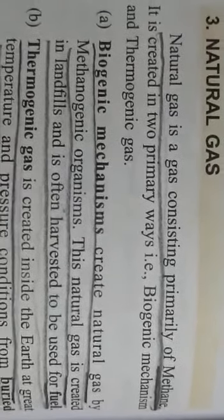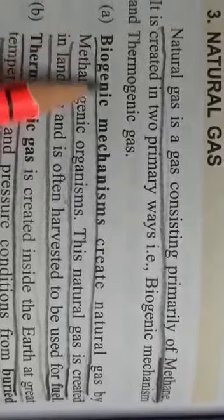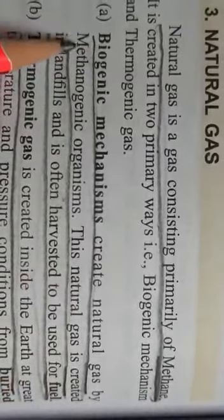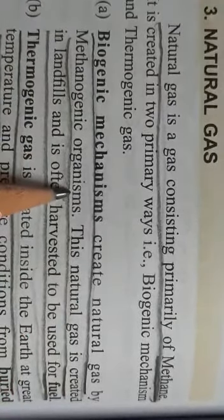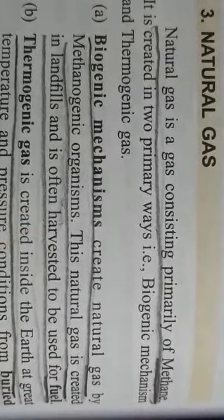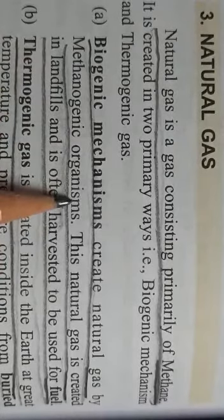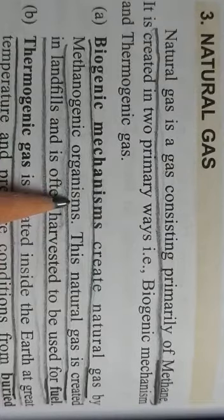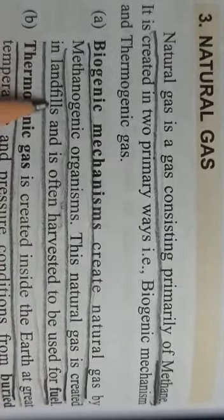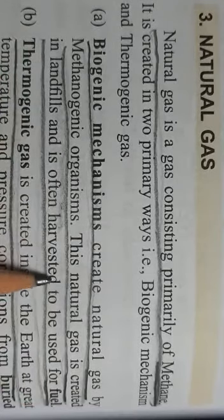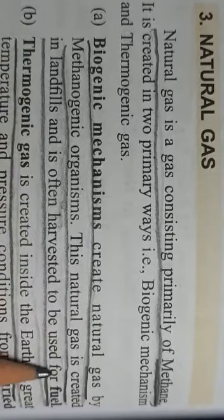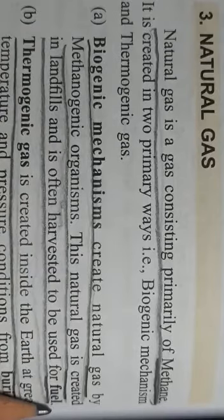Biogenic mechanisms create natural gas by methanogenic organisms — that is, organisms that help in the formation of methane. This natural gas is created in landfills and is often harvested to be used for fuel.